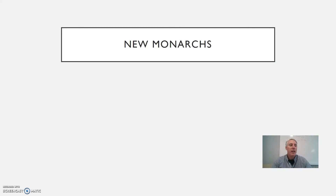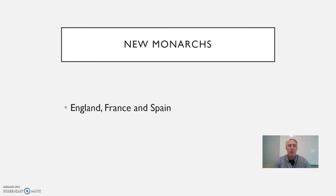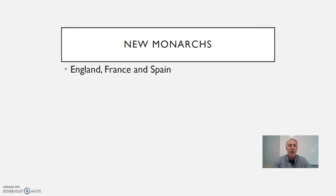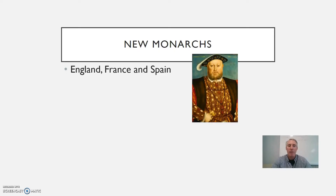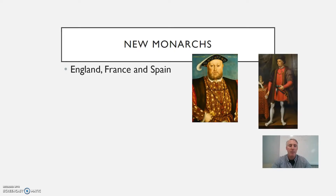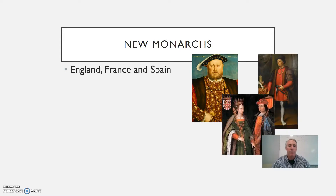With the failure of really centralized power in central Europe and Germany — and with some limited centralization going on in the Italian city-states — strong states did emerge in other parts of Western Europe at this time, most notably in England, France, and Spain. In England you had Henry VIII, in France you had Louis XI, and in Spain you had the joint monarchy of Ferdinand and Isabella, or Fernando and Isabelle as they are more properly known.